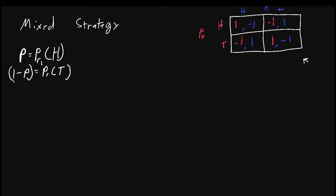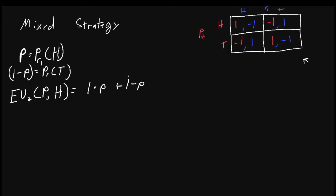Now we want to know what is player two's expected utility, or his average utility, when player one plays heads with probability p and player two plays heads. If player two plays heads, p percent of the time player one will also play heads, so player two will get one times p. However, one minus p percent of the time, player two will earn negative one, because player one will be playing tails — so times negative one.